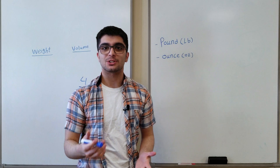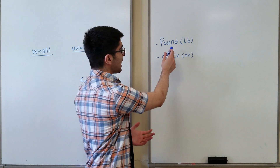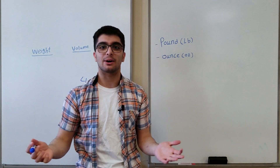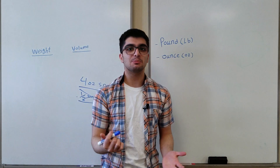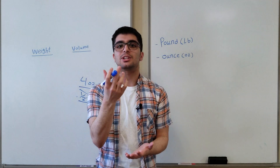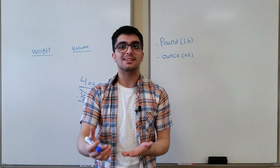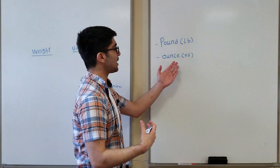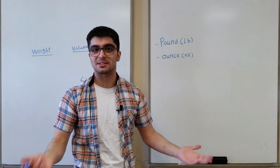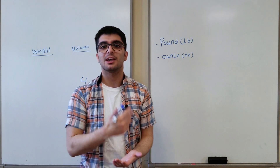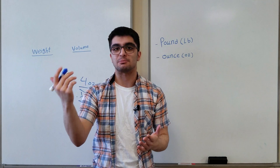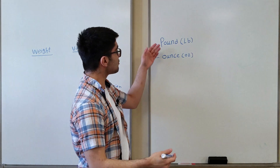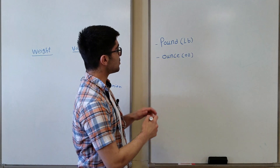So in this video we are talking about pounds and ounces. What is a pound? A pound is basically a unit of measuring mass and weight. Same for ounces — an ounce is basically also a unit of measuring mass or weight. But what is the difference between these two?